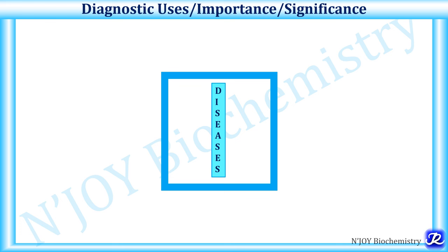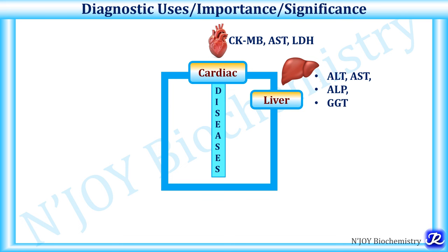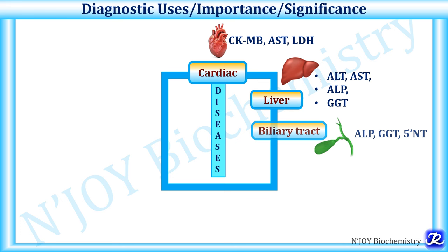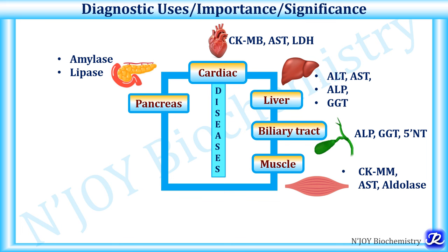Now let's see the diagnostic uses of enzymes. These enzymes are useful for diagnosis of particular diseases, as their levels are increased in disease conditions. Enzymes increased in cardiac diseases are CK-MB, AST, and lactate dehydrogenase. Enzymes for liver diseases are alanine transaminase, aspartate transaminase, alkaline phosphatase, and gamma-glutamyl transferase. Biliary tract disease markers are alkaline phosphatase, gamma-glutamyl transferase, and 5'-nucleotidase. Muscle disease markers are creatine kinase MM, AST, and aldolase. Pancreatic disease markers are serum amylase and lipase.